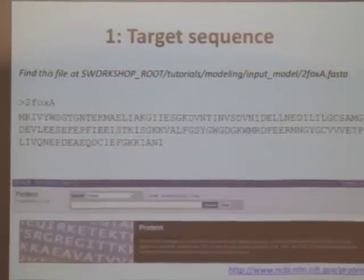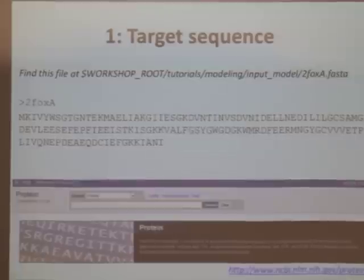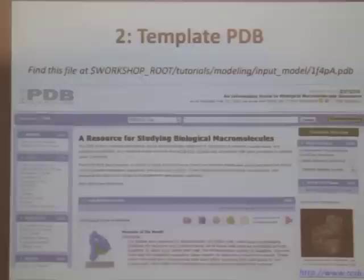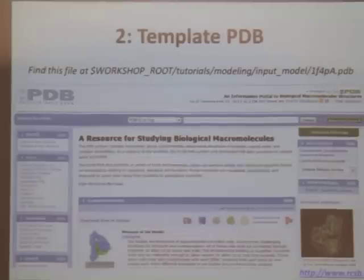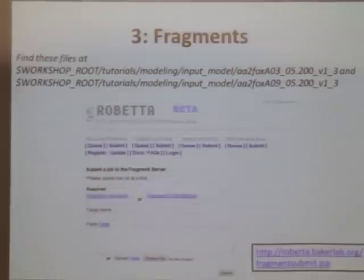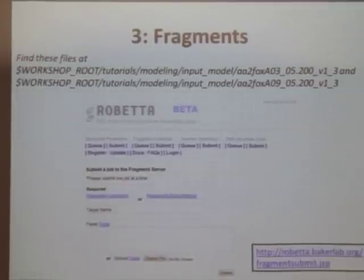You need to have your target sequence, and you can go to the NCBI website to find it. Go to the PDB website to find the PDB file for your template. You'll want to clean your PDB the way Stephen talked about yesterday with the clean PDB script, especially for comparative modeling — it will make your life a lot easier if you remove clashes to begin with. You'll want fragment files because this protocol uses fragment-based loop building, as Stephanie already discussed.